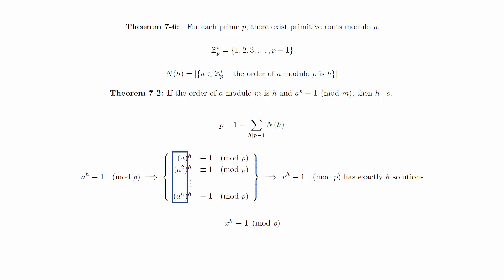Therefore, all solutions of this equation are of the form a to the r for some r between 1 and h, inclusively. But we know that a to the r has order h if and only if the GCD of r and h is 1, and so there must be exactly phi of h numbers that have order h.